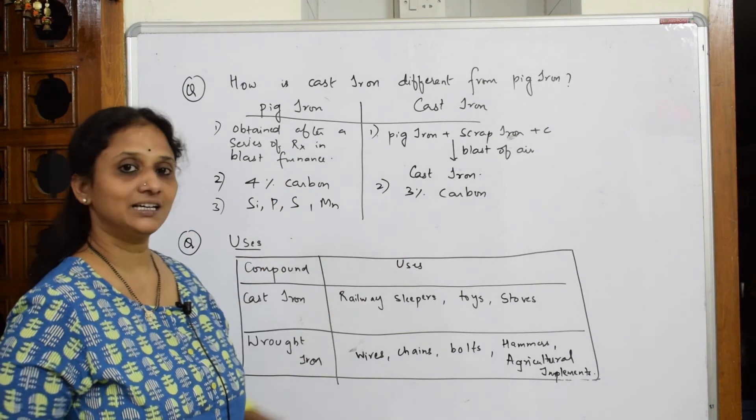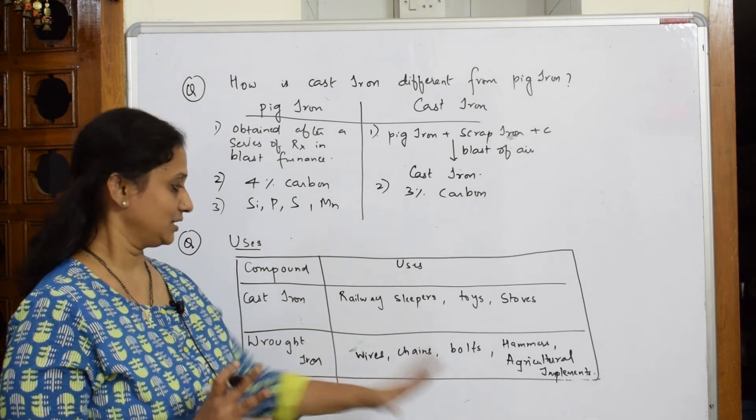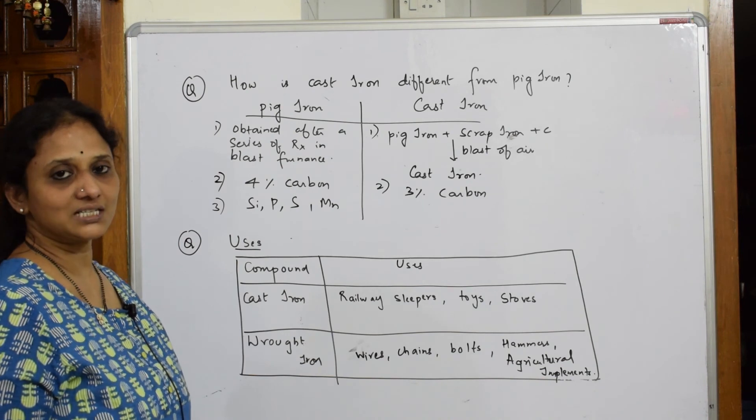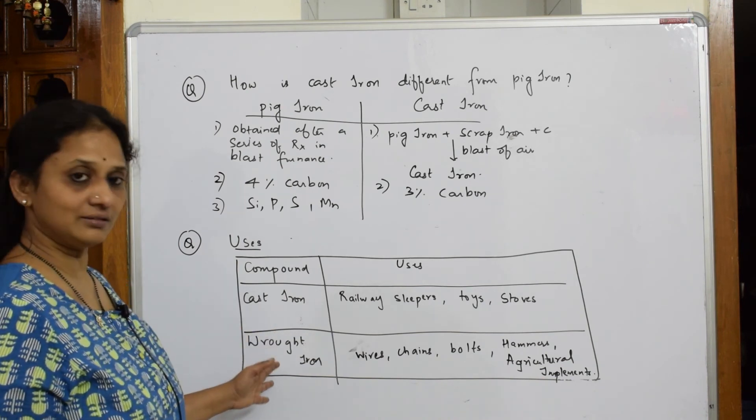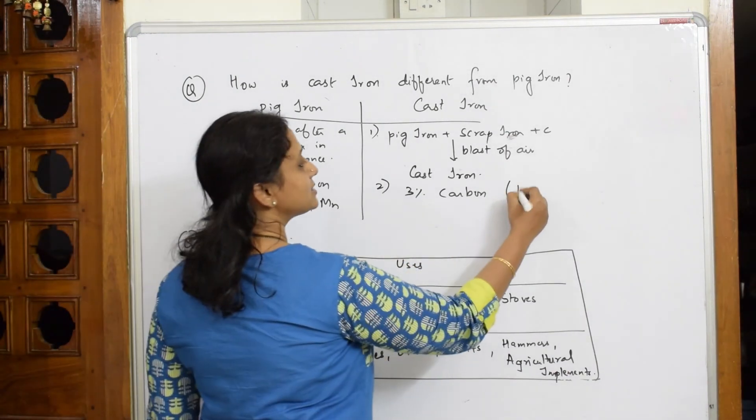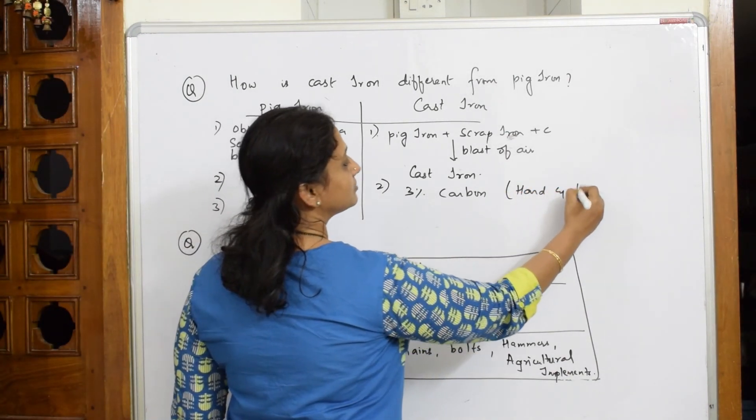When I speak about cast iron, as I said, 3% carbon. If I say 3% carbon, hence it is hard and brittle. These are the uses which I've listed out for cast iron and pig iron.